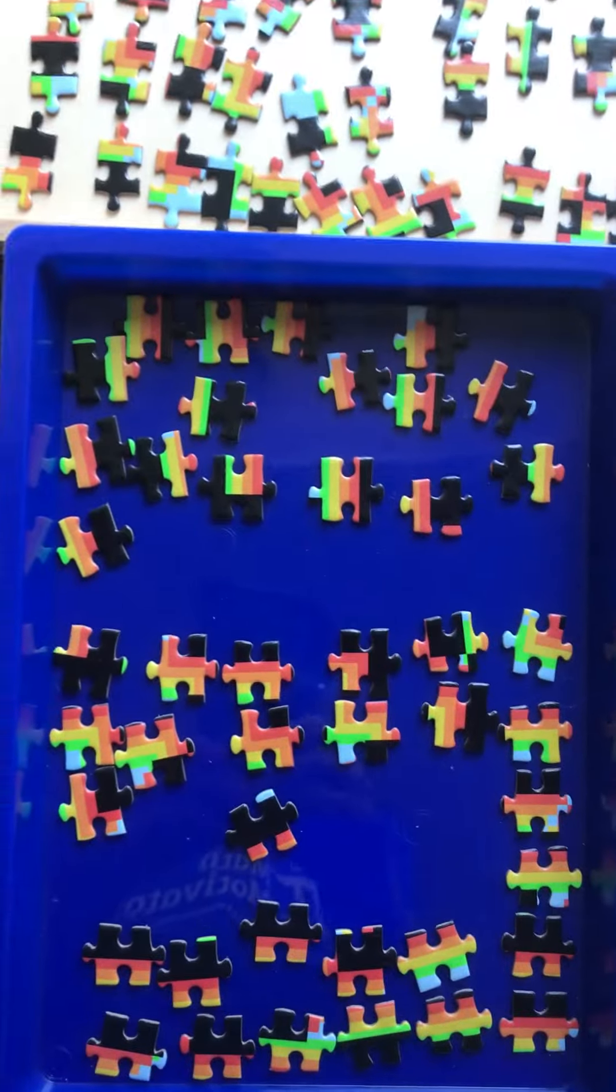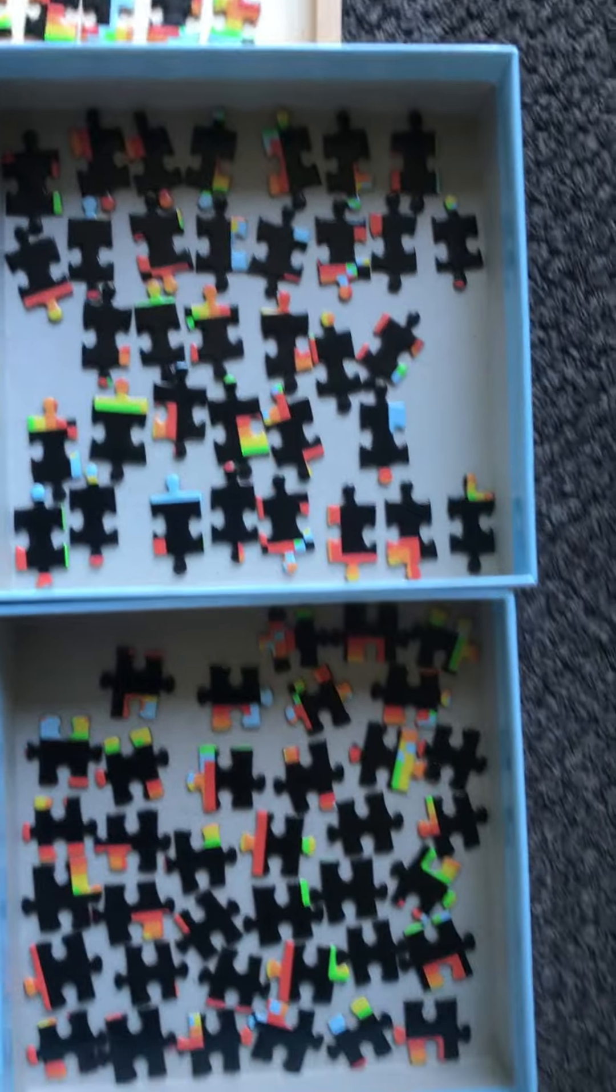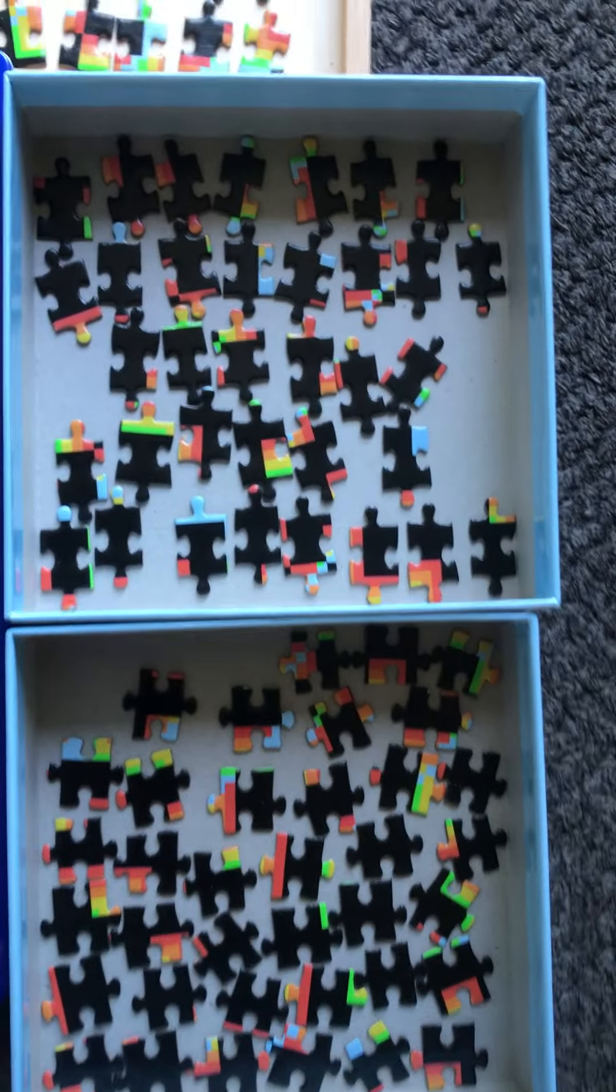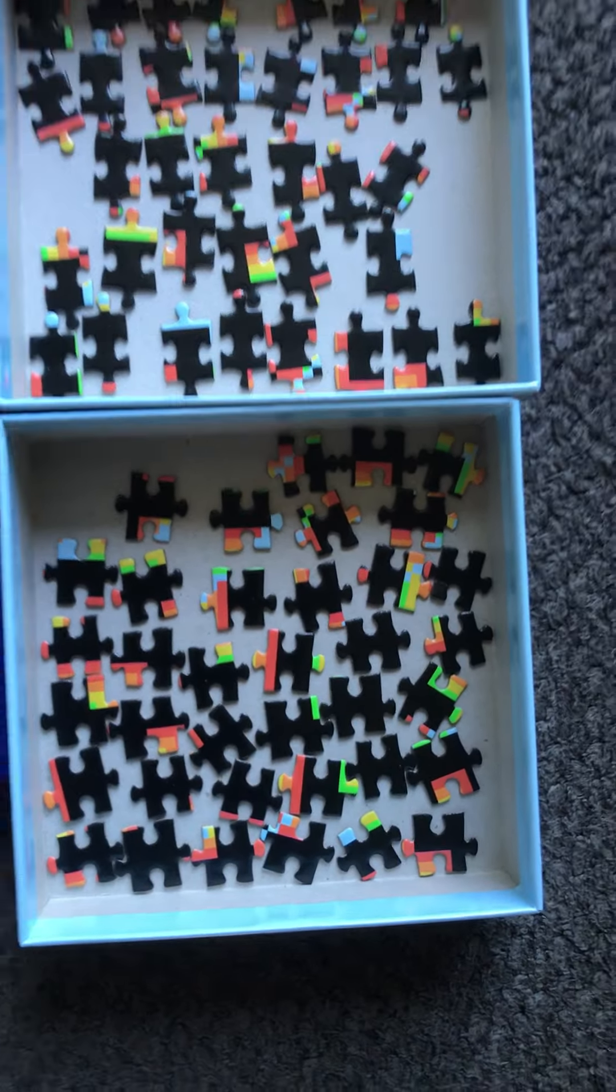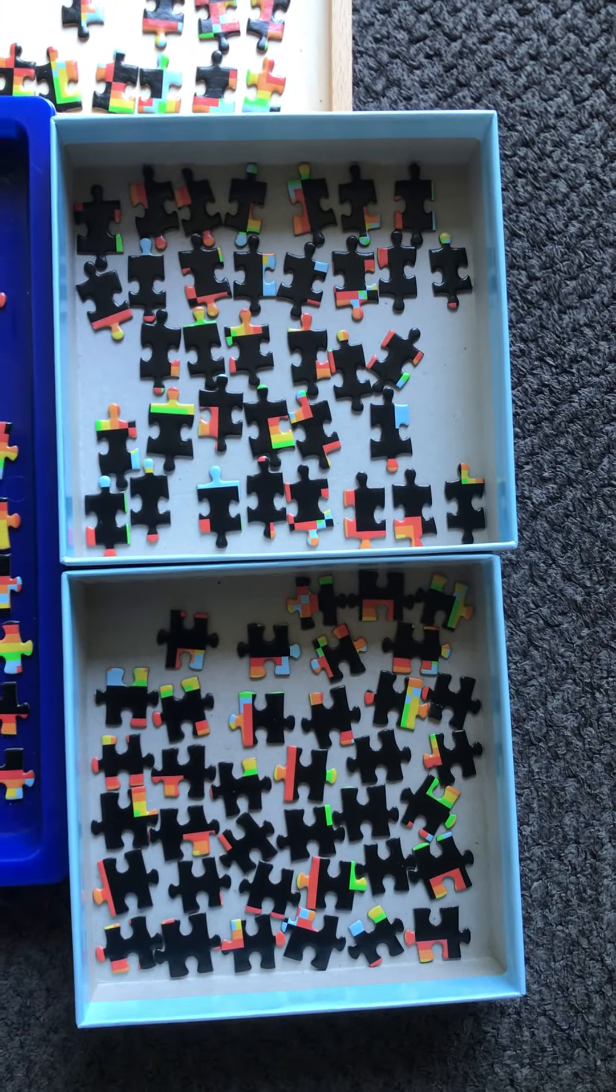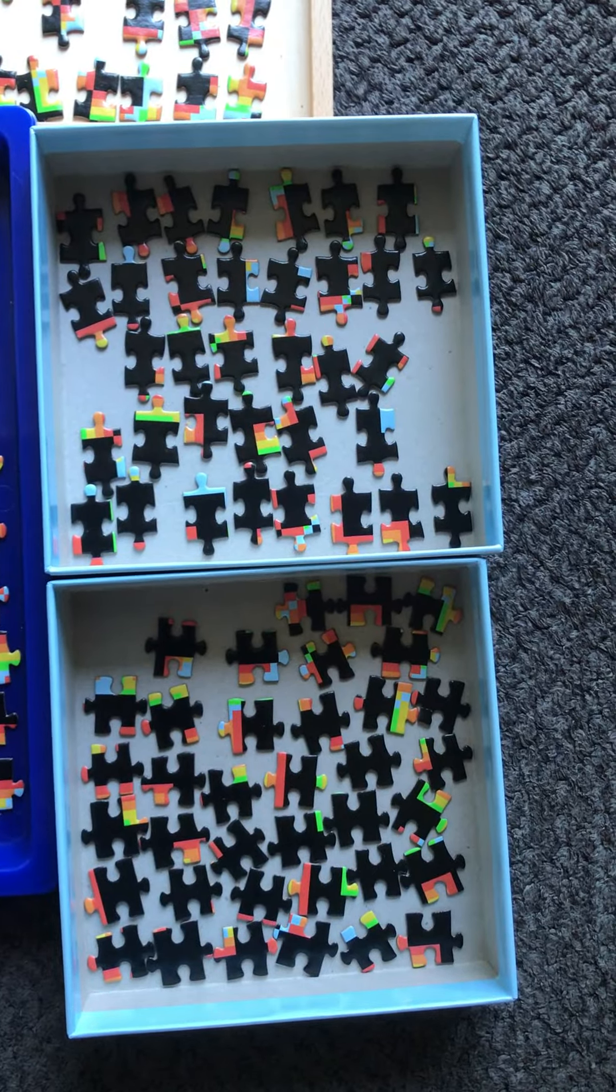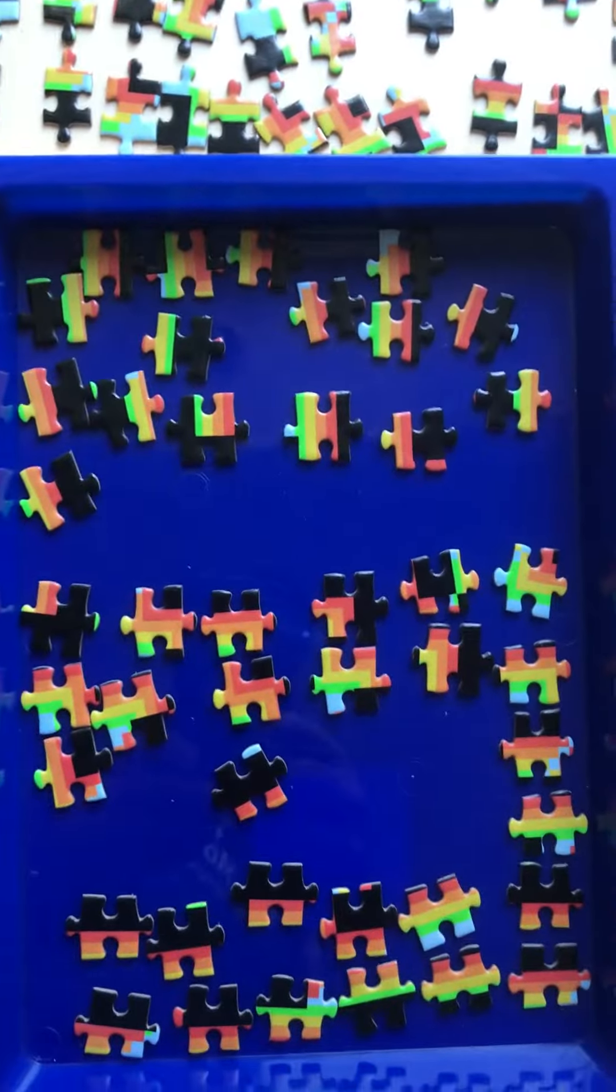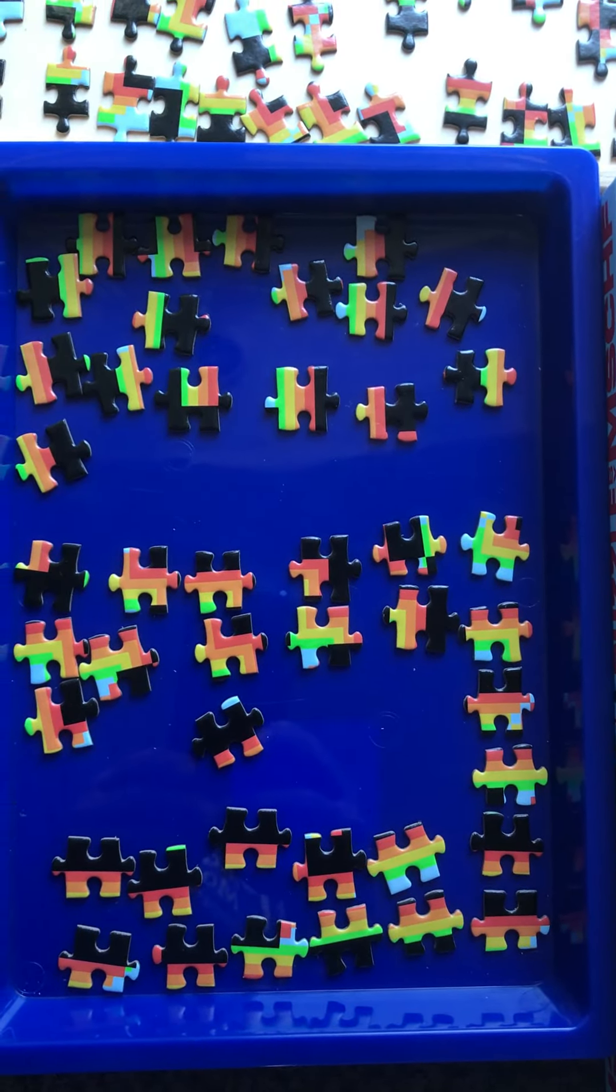This blue tray has all fat pieces, and then these two box tops have long pieces in this one and fat pieces in this one. You notice the box top ones—the difference is these have mostly black in them. That's really the only difference.